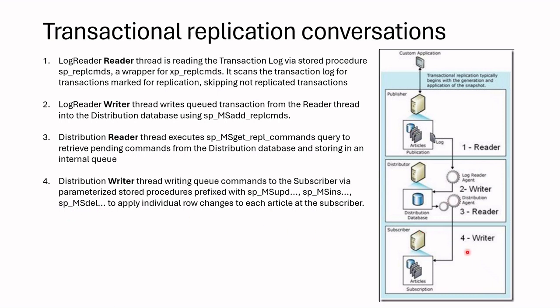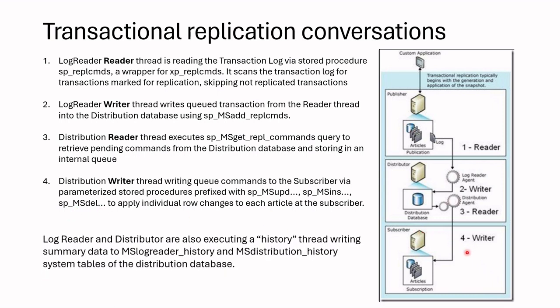There are also other history writer threads writing summary data to the distribution database — we should be aware of this as well. So if you are facing latency, you should investigate these four steps and find out where the latency is happening. The tool I usually use to find the bottleneck within these four steps is tracer tokens.